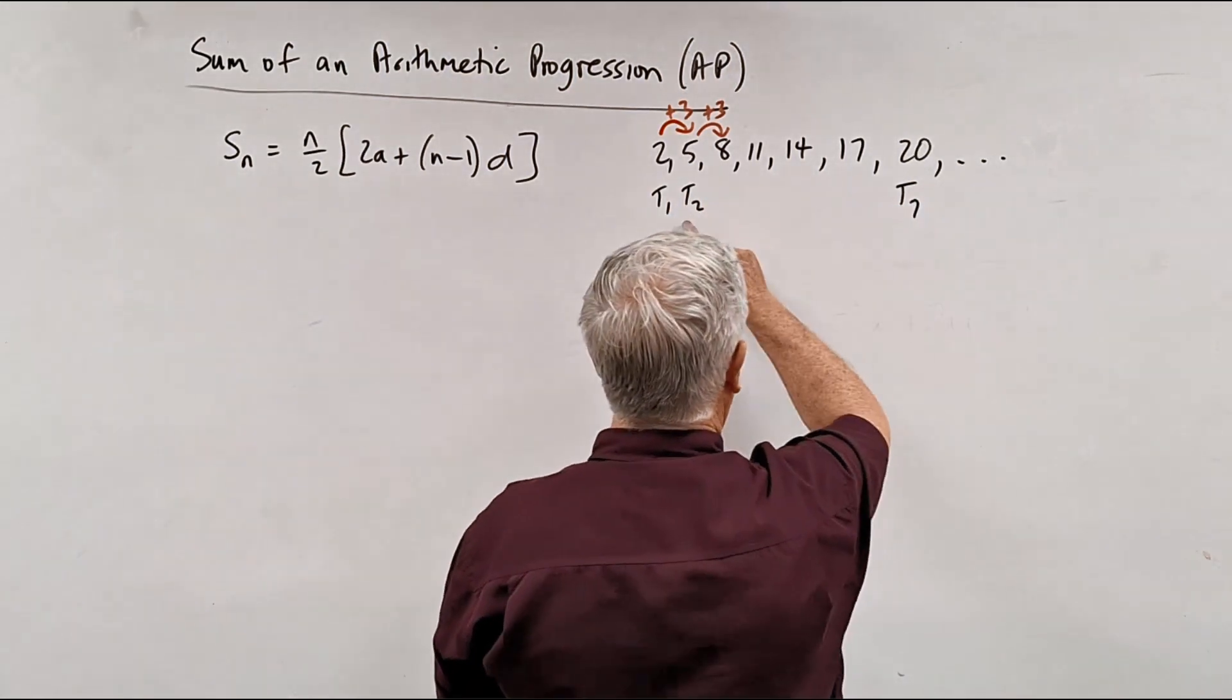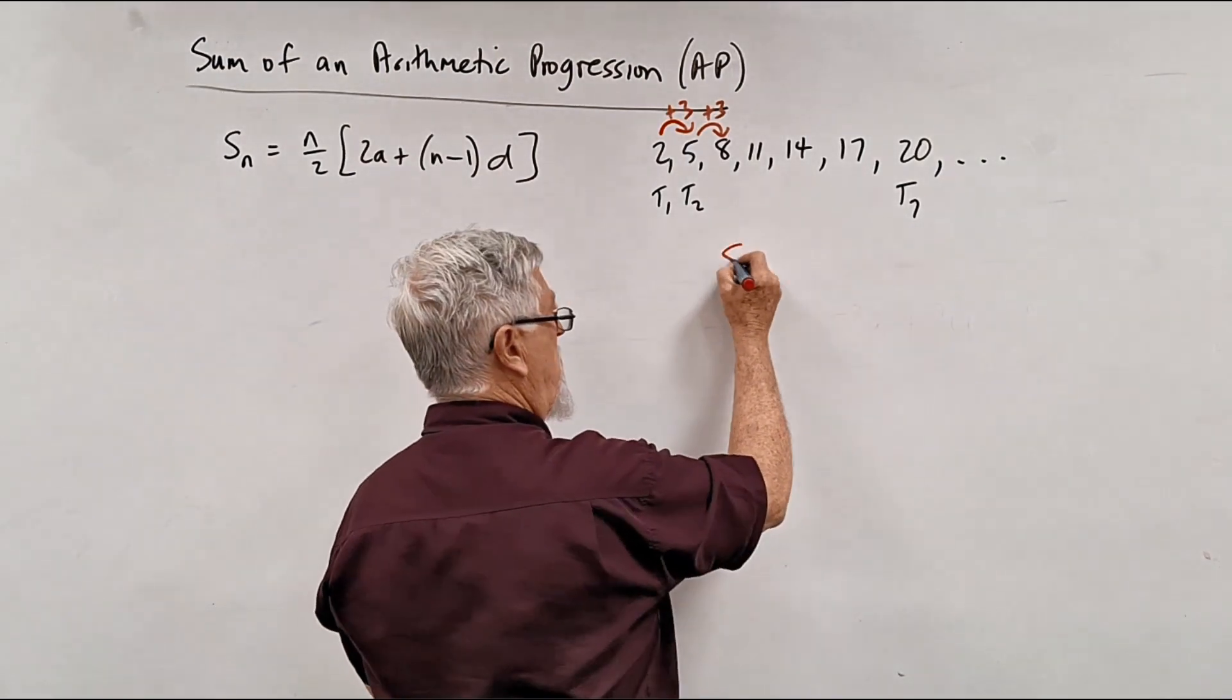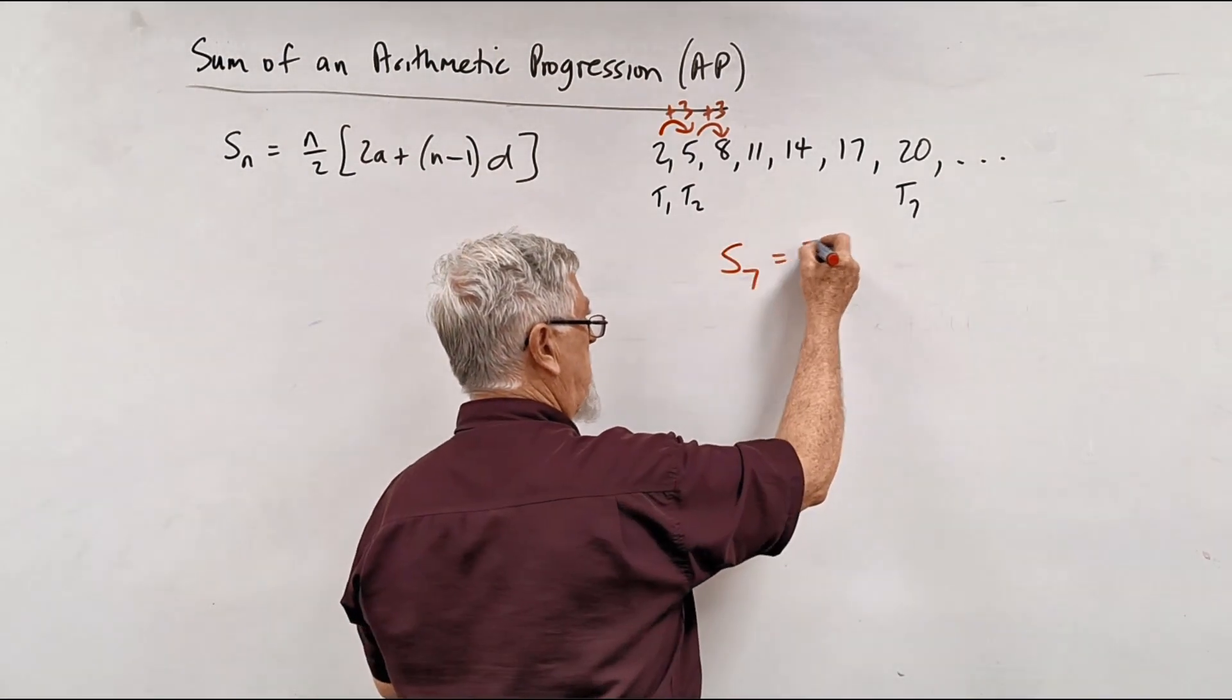This is really easy. If I wanted to, I could add up those first 7 numbers which I have just done. And the sum, what's the way you write it?